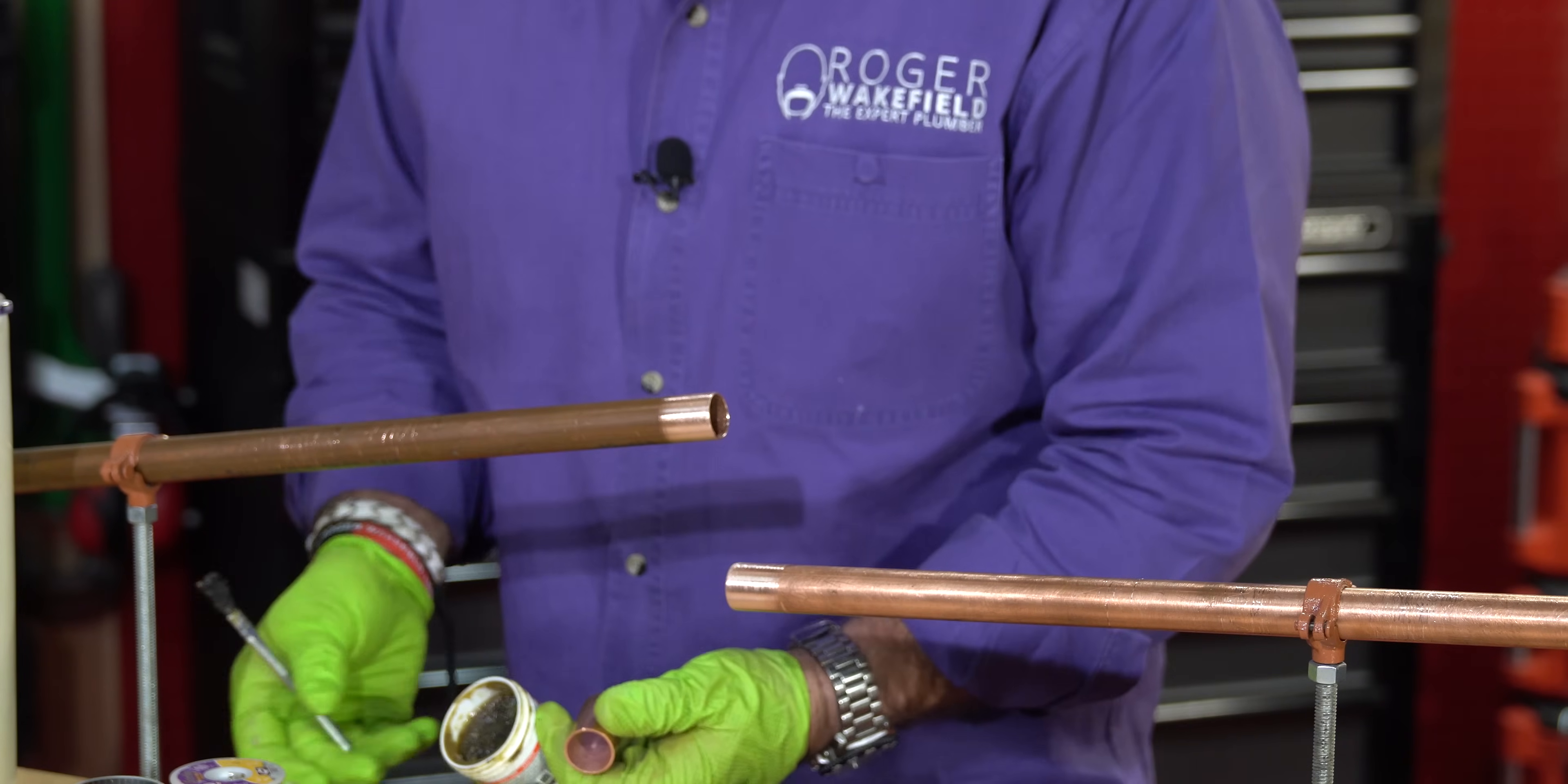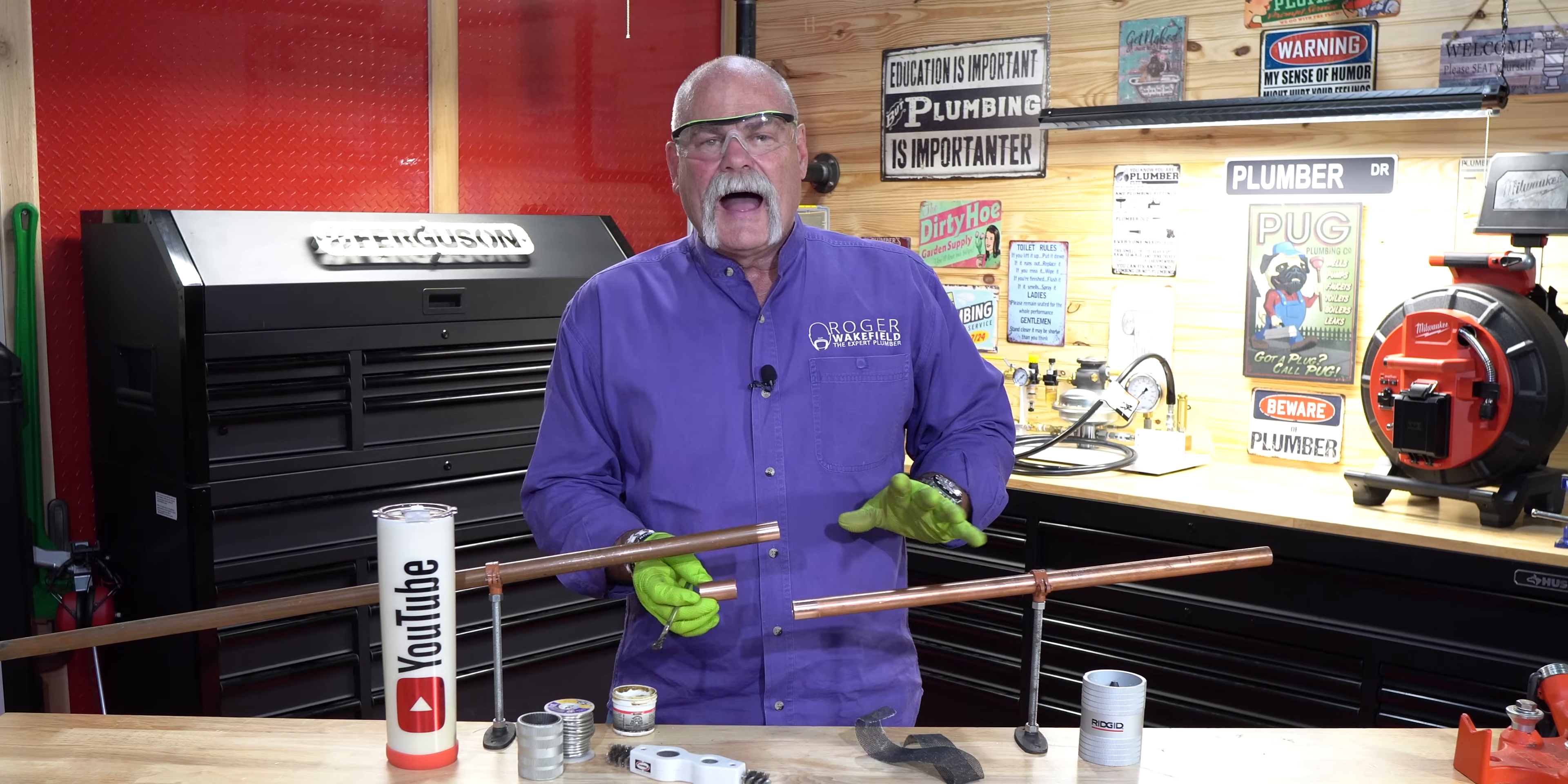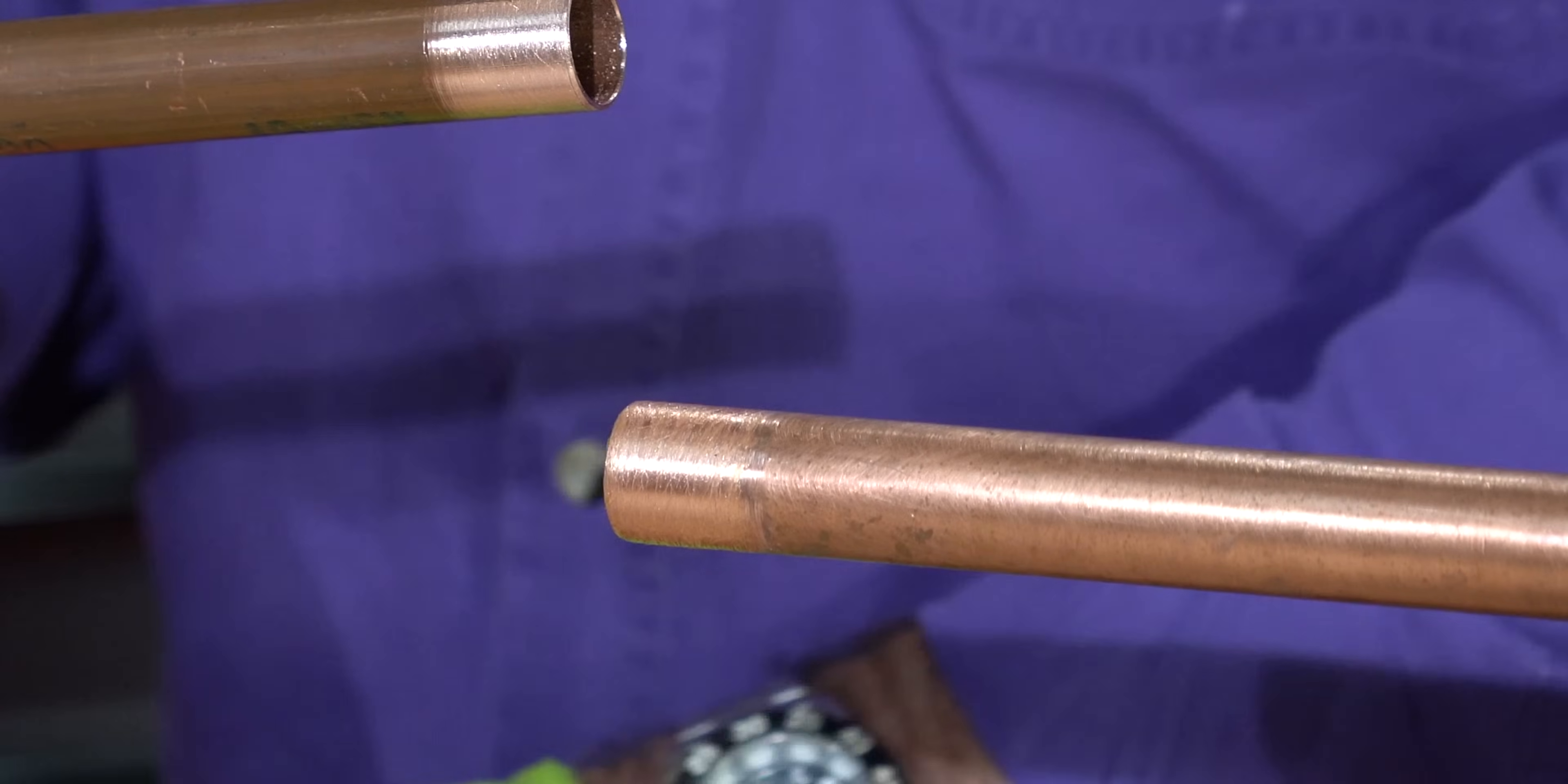Now at this point, before I put it together, I'm going to do two things. Number one, this is a slip fitting. I'm going to look and see where I need to be. I know that I'll be able to look at it from the inside. I'm going to go ahead and put my flux on the outside of the pipe and then on the inside of the fitting.